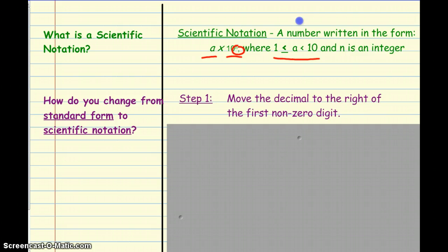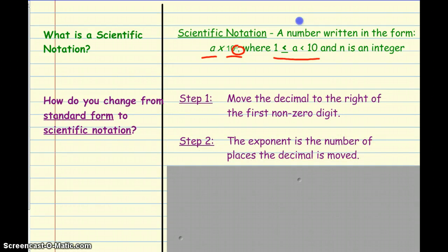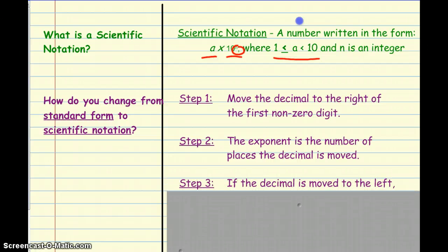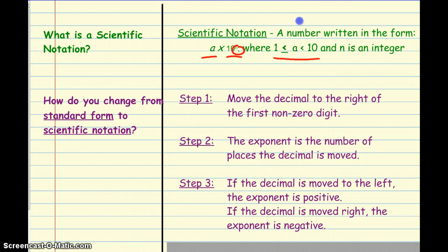So, how do you change from standard form into scientific notation? There are a few steps. The first step is to move the decimal to the right of the first non-zero digit — that means any number other than zero. Step two: that exponent n is the number of places that we move the decimal. Step three: if the decimal is moved to the left, the exponent is positive; if the decimal is moved to the right, the exponent is negative.